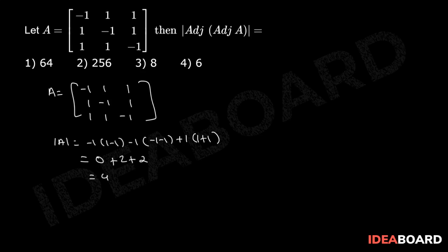Now we have to find the value of det of adjoint of adjoint A. We know that det of adjoint of adjoint A equals det(A) raised to the power (n minus 1) squared, where n is the order of the matrix. Here n equals 3, therefore det of adjoint of adjoint A equals det(A) to the power 4, that is 4 to the power 4, which equals 256.